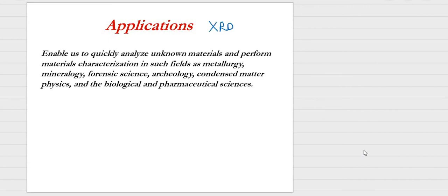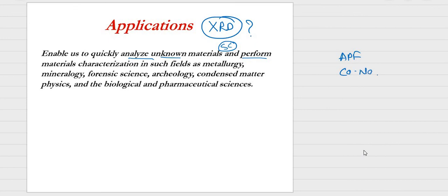Now the applications of XRD. We already know it gives us the internal structure of any solid material. It enables us to quickly analyze unknown materials — by taking the XRD of an unknown material, we can identify if it has a simple cubic, face-centered cubic, or other unit cell structure. From that we can determine the atomic packing factor, coordination number, and more. It is essentially a material characterization technique.